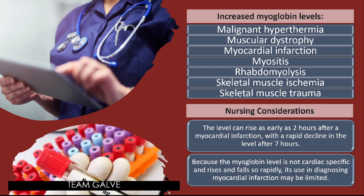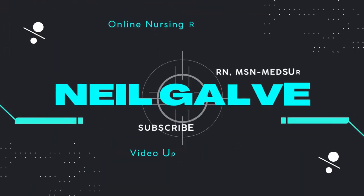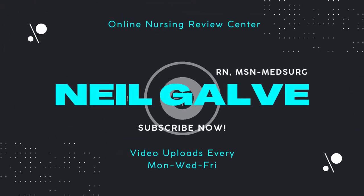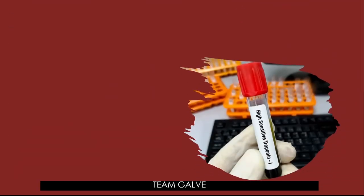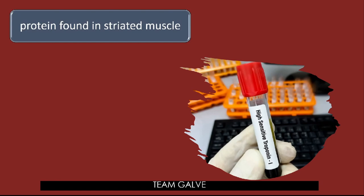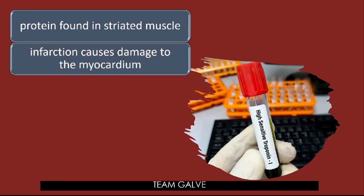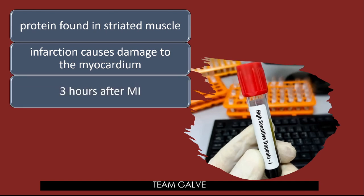Now let's proceed to our third cardiac marker: troponin I and troponin T. Troponin is a regulatory protein found in striated — myocardial and skeletal — muscle. Increased amounts of troponin are released into the bloodstream when an infarction causes damage to the myocardium. Troponin levels are elevated as early as 3 hours after MI.